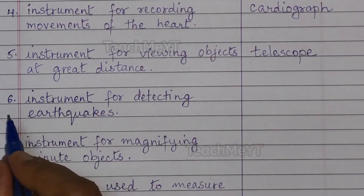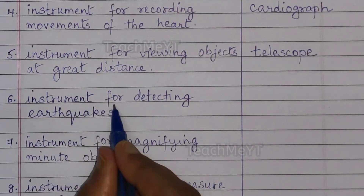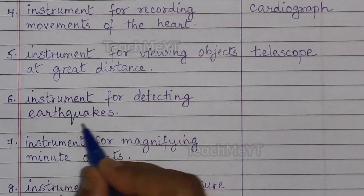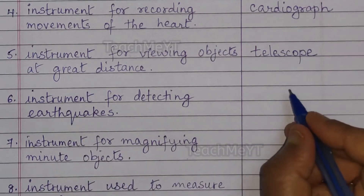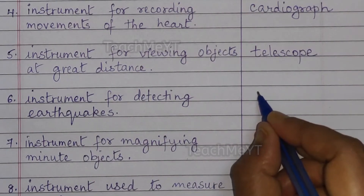Number 6. Instrument for detecting earthquakes is a seismoscope.